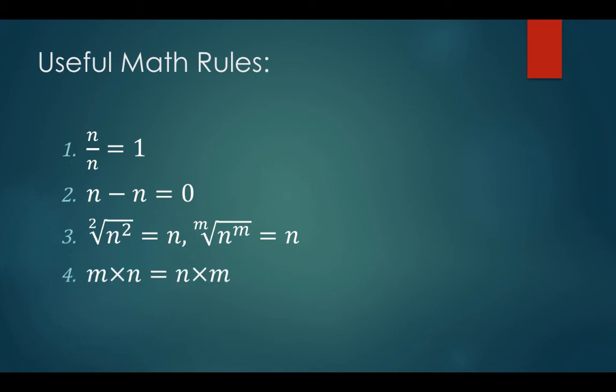m times n equals n times m, also known as the associative rule.